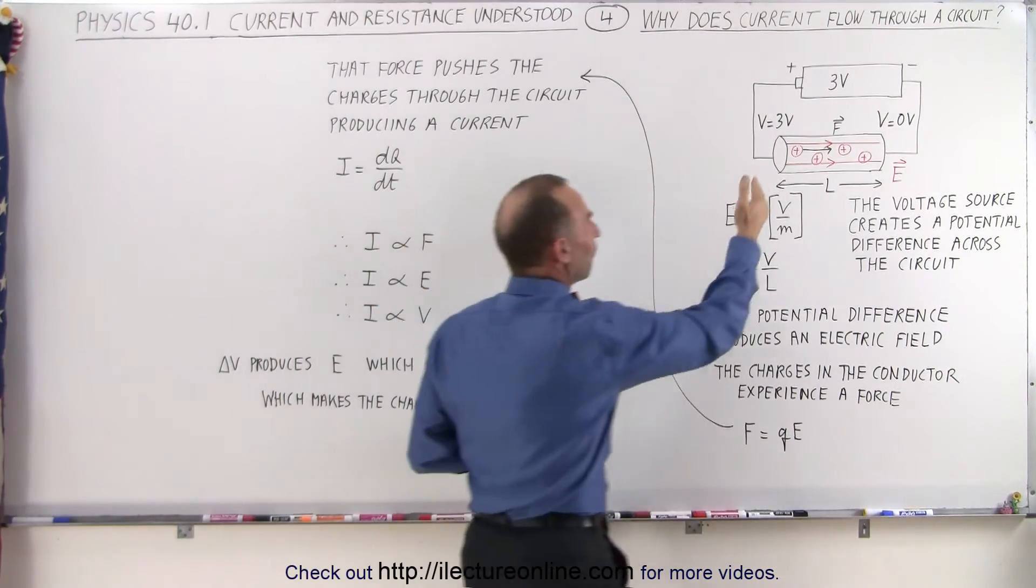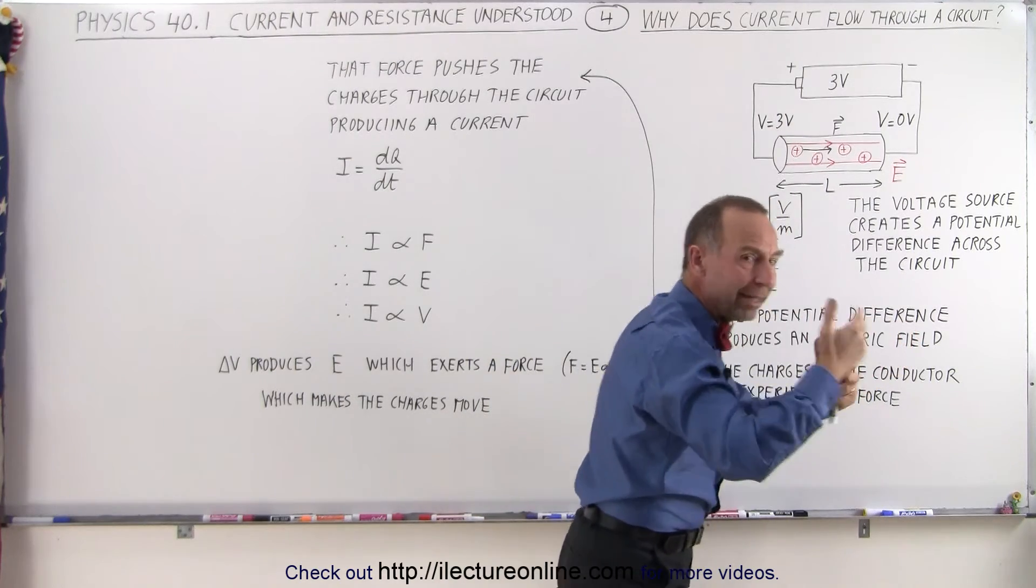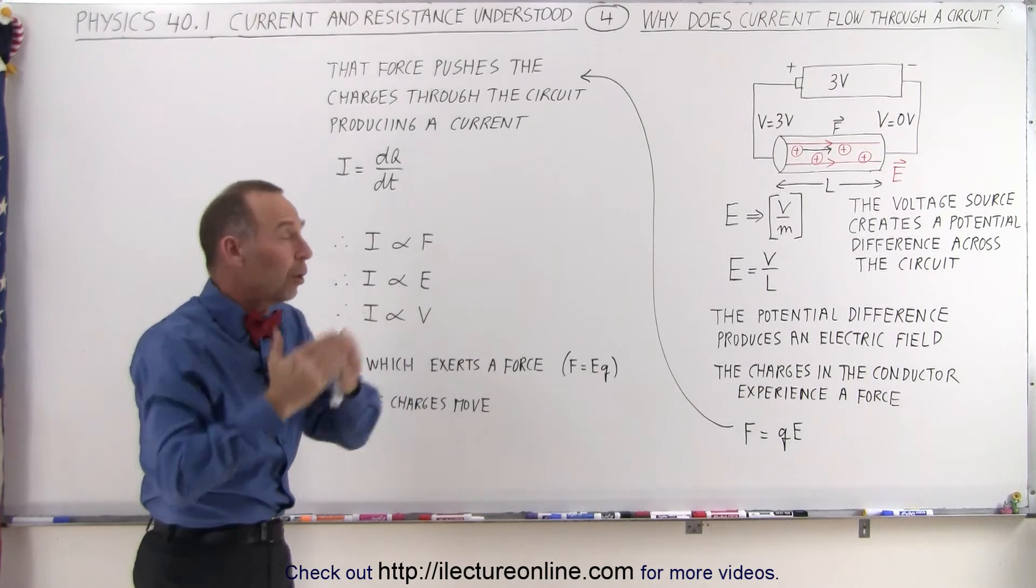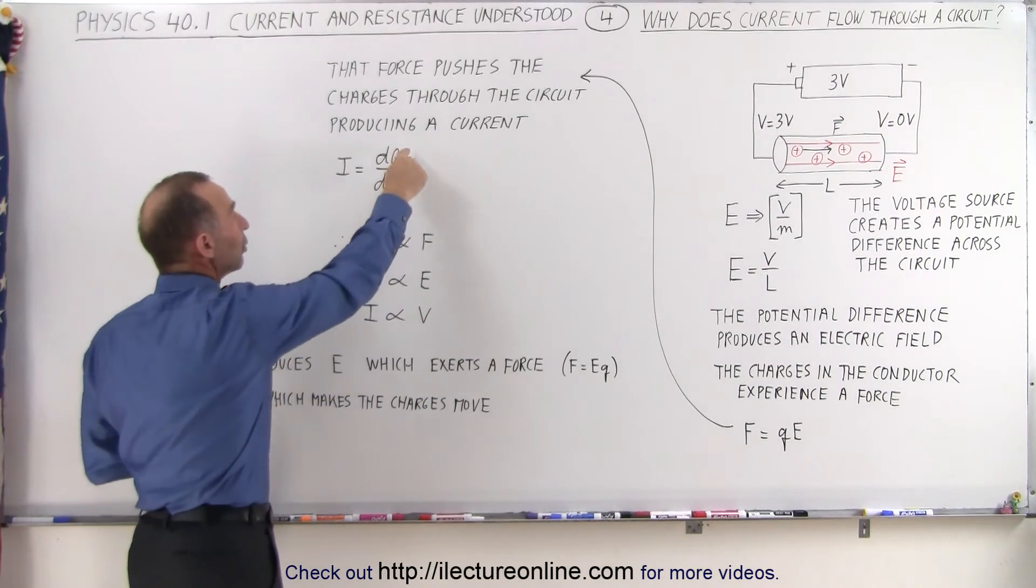Once these charges feel that force, they get pushed through the circuit, which is then what produces the current. Because by definition, a current is the flow of charges per unit time. So dq dt,